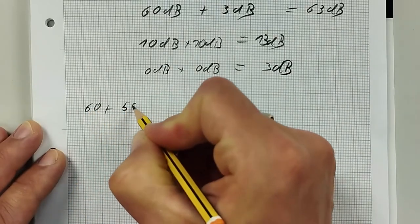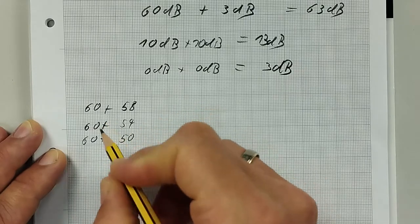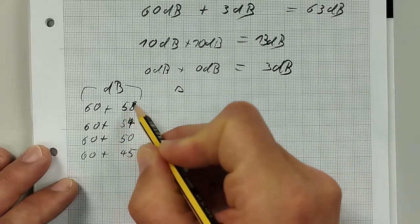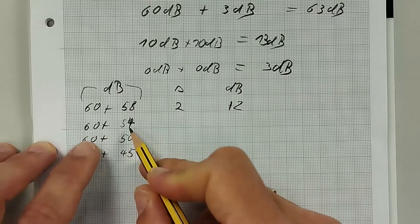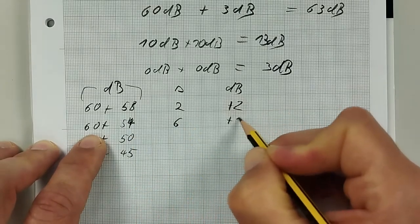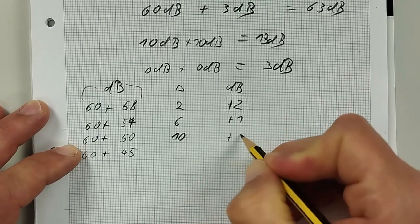And this magic also works if there's a difference between the two values you'd like to add. Let me draw some calculation work tasks for you: 60 plus 58, 60 plus 54, 60 plus 50, and 60 plus 45. The idea is one value will always be higher than the other. This will stay, and the other will only add a little bit. Maximum would be plus 3. Here in the beginning we have 2 decibel difference, the delta is 2. Keep in mind: if 2 decibels are missing, you just have to add 2 decibels. If the difference is 6 decibel, you only add 1 decibel. If the difference is 10 decibel, then you only add 0.4. And if the difference is higher than 10 decibel, then just add nothing.